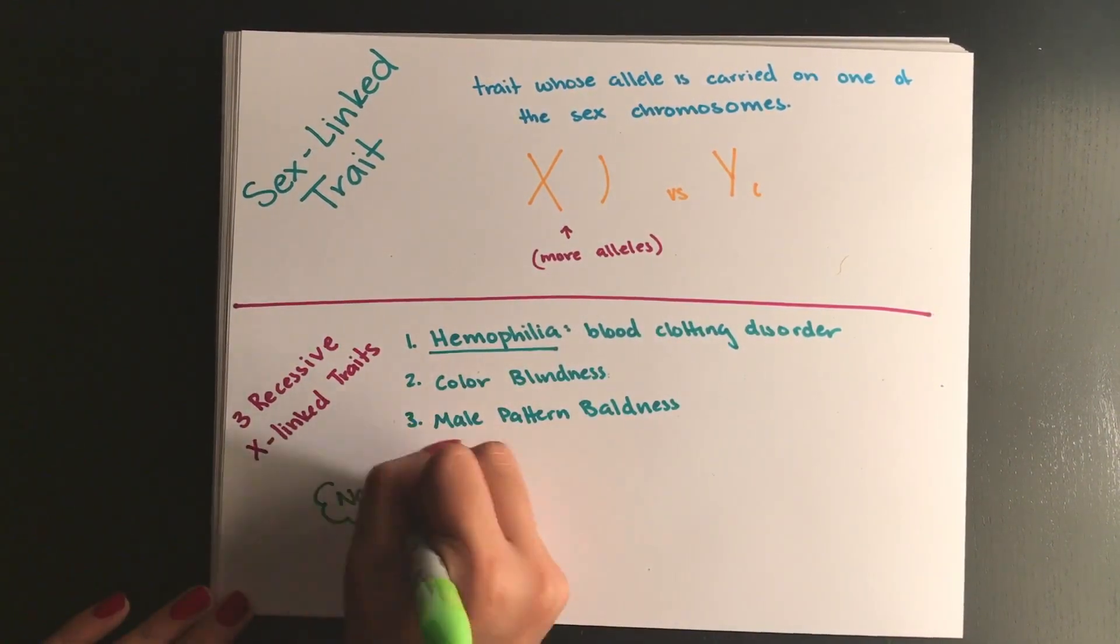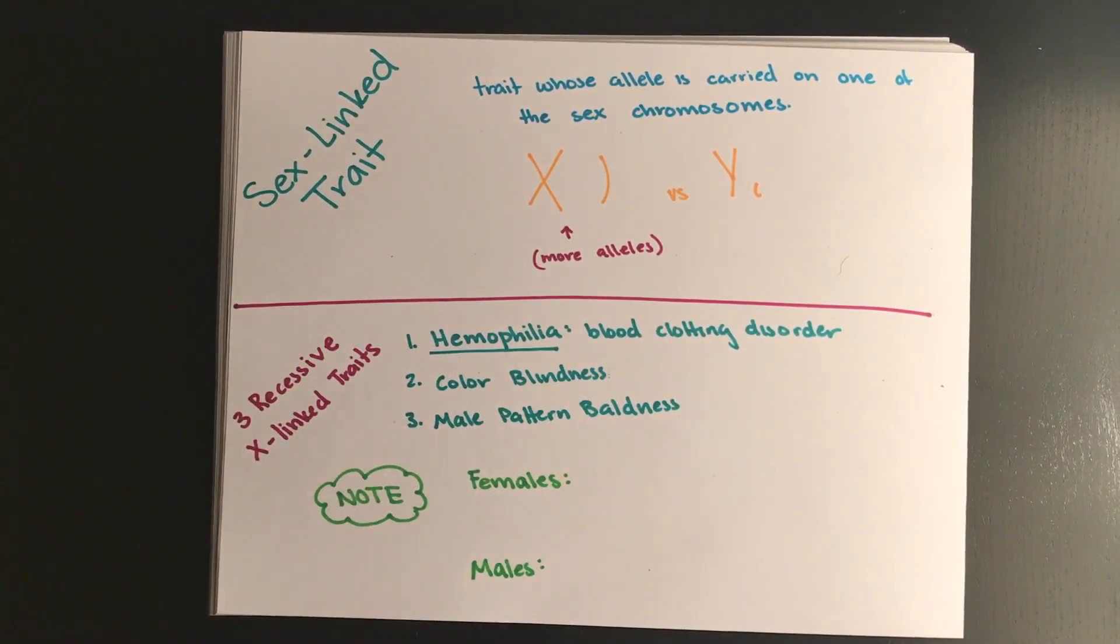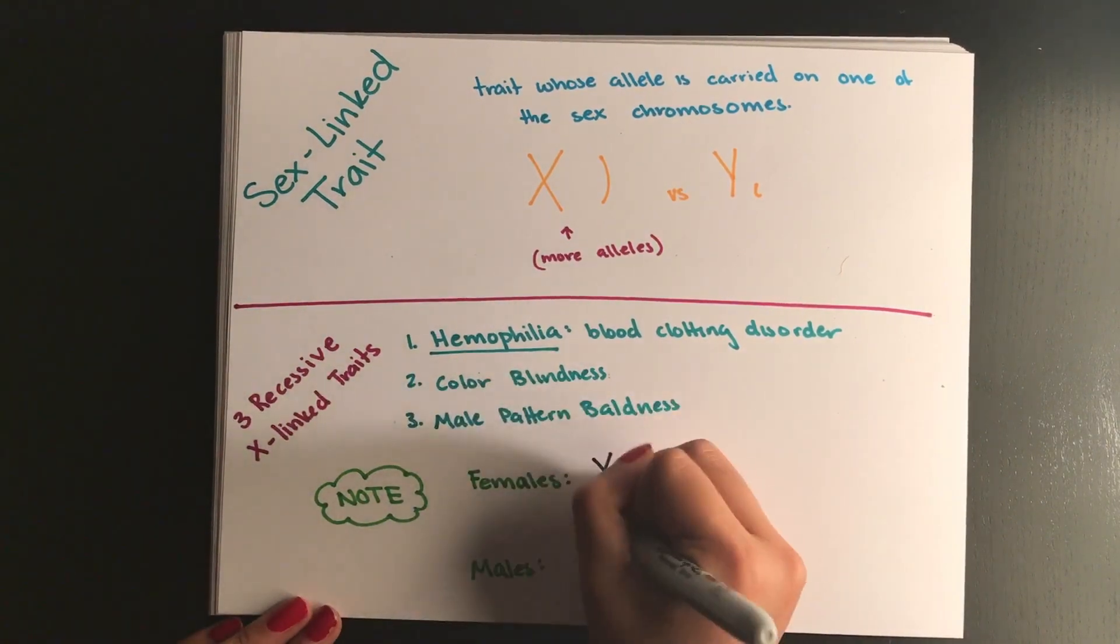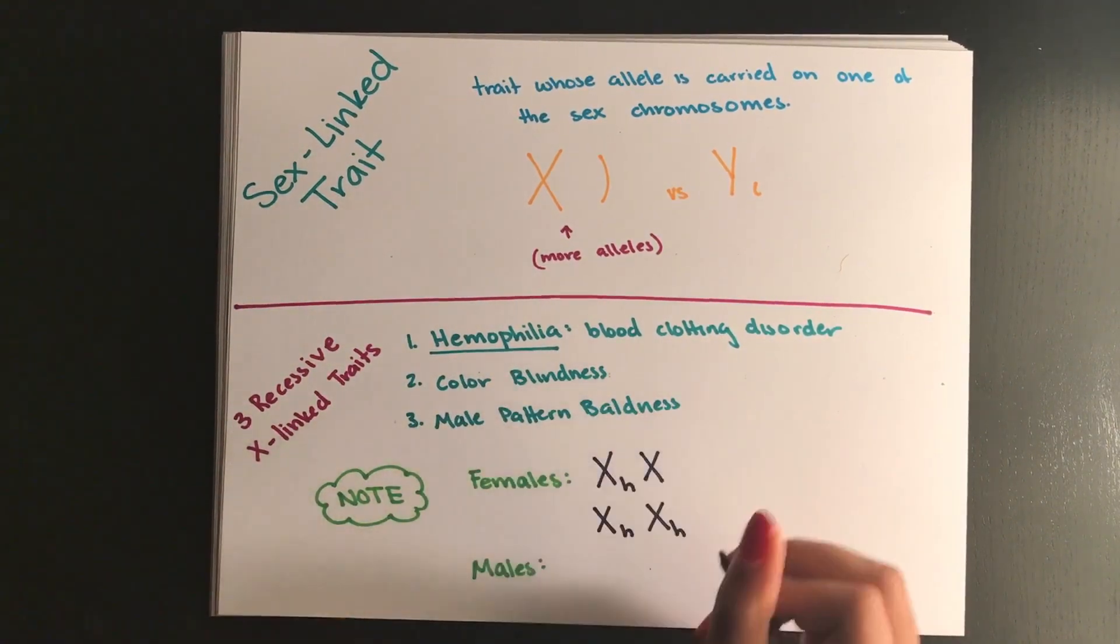Hemophilia specifically is an X-linked recessive trait, meaning that a female can only get it if she's homozygous for the X chromosome that carries the allele for hemophilia.